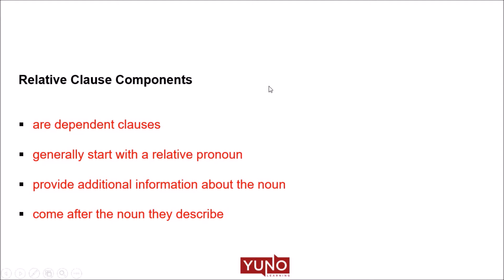Let's look at the components of a relative clause. They are dependent clauses, which is a group of words that consists of a subject and a verb, yet it is not a complete sentence that can stand alone. They generally start with a relative pronoun, but it can be omitted also. They provide additional information about the noun, and they come after the noun they describe.